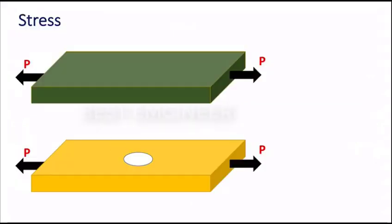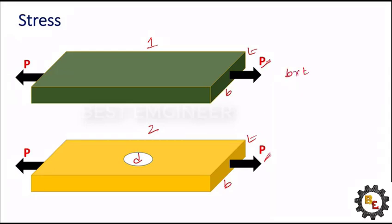There are two components: component one and component two, both rectangular plates with cross-section B times T. In component two, we made a hole inside with diameter D. The same load is applied to both components. Component one is restricted by the cross-section B into T. Here we made a hole at the center, so the restriction is B minus D into T. So definitely the stress distribution will vary.